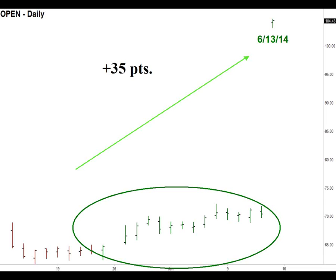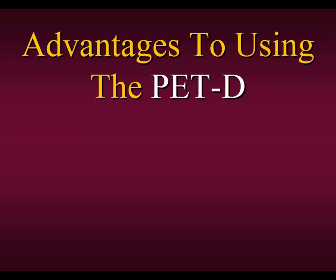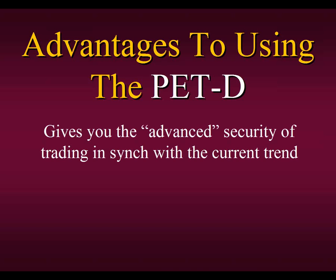In order to trade consolidation patterns, we need to know what the trend is — you can't just say there's a consolidation and buy or sell. We need to see an already established trend, then look for a specific consolidation pattern and jump on board when it breaks out. The advantages of the PET-D include advanced security of trading in sync with the current trend, it can be used as a stop placement method, and it supplies numerous trading techniques based on the color bars.